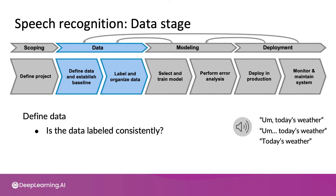Any of these three ways of transcribing the audio is just fine — I'd probably prefer either the first or the second, not the third. But what would hurt your learning algorithm's performance is if one third of transcriptionists use the first, one third the second, and one third the third way, because then your data is inconsistent and confusing for the algorithm. Spotting and correcting inconsistencies like that — maybe just asking everyone to standardize on the first convention — can have a significant impact on your learning algorithm's performance.